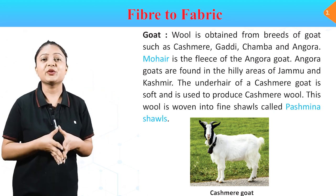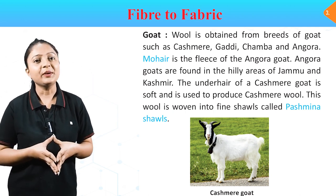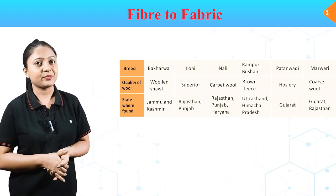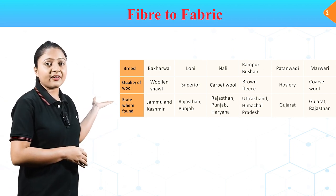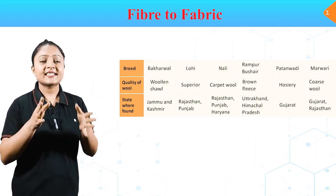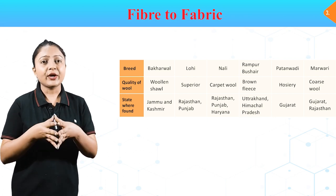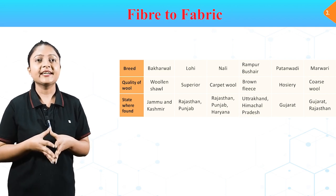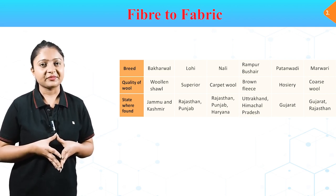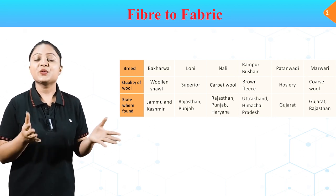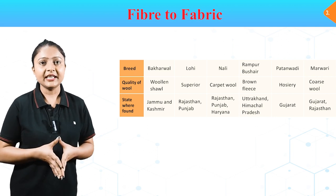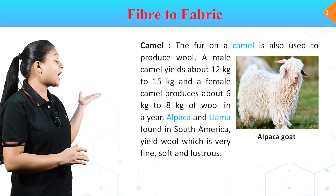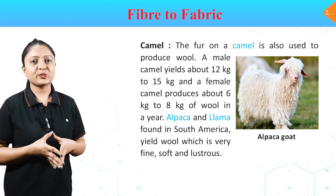और इस picture में हम एक Kashmiri goat को देख सकते हैं, इससे भी हमें wool मिलता है. Breeds table — Bakharwal: wool and shawl, found in Jammu and Kashmir. Lohi: superior quality wool, found in Rajasthan and Punjab. Nali: carpet wool, found in Rajasthan, Punjab, Haryana. Rampur Bushair: brown fleece, found in Uttarakhand and Himachal Pradesh. Patanwadi: Hoshri, Gujarat. Marwadi: coarse wool, Gujarat and Rajasthan.